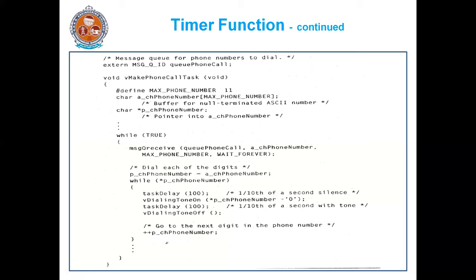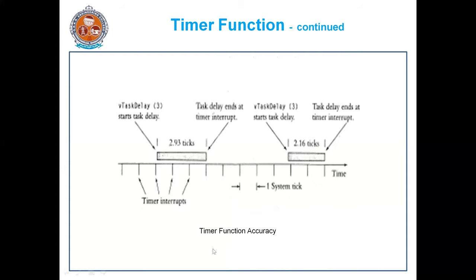This is how the timer function works. Whenever you use this timer function, you must consider timer function accuracy. Suppose you give V task delay of 3 — here these are called as system ticks. This is the time interval line, and each one is called one system tick.